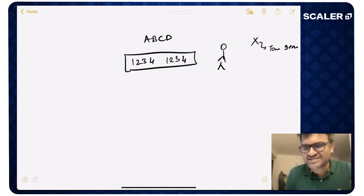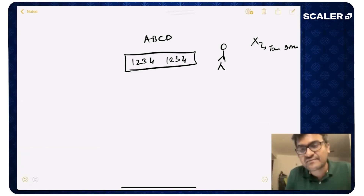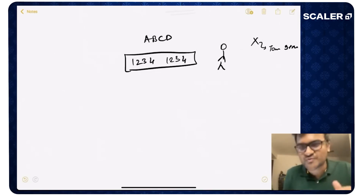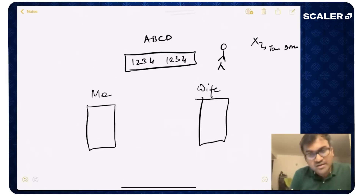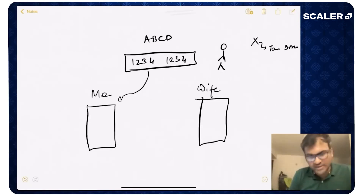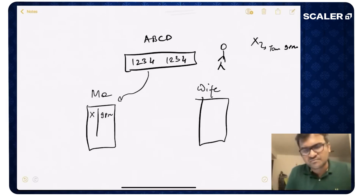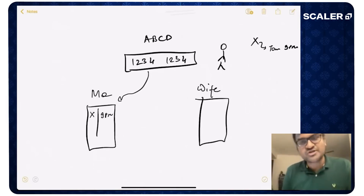Then I start to hit the problem — most systems hit problems when they hit scale. I'm getting a lot of calls and I'm not enough to address all of them myself. So I decide to get my wife involved. Now this number has both me and my wife. Both of us sit with our diaries; calls get routed to whichever of us is free. I've suddenly doubled my capacity — if I could take 1,000 requests a day before, now I can take 2,000.